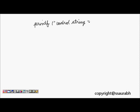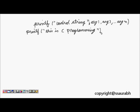And then the arg1, arg2 till argn. So this is the way to write printf. So if we write like simply printf 'this is C programming', so this will be the output on the screen after the execution of this line.